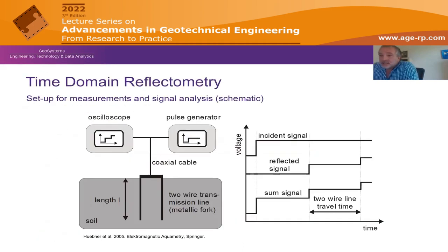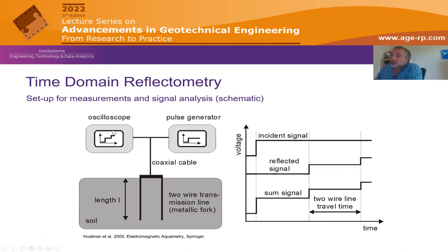TDR, or time domain reflectometry, is a common method used in various disciplines to measure moisture content. An oscilloscope sends a rectangular signal that travels along a coaxial cable and enters a sensor, producing a first reflection. When the signal is completely reflected, another reflection is generated. By observing the sum of the sent and reflected signals, one can analyze the travel time along the sensor forth and back.